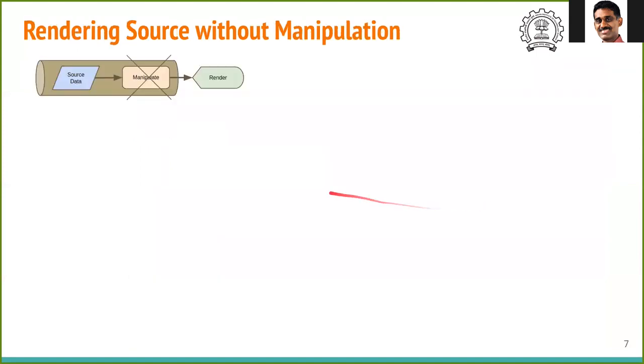We will now see some demonstrations of visualization in ParaView. Let us take the simple example where you have a source data and you directly render it without any manipulation. Let us say we solve this equation del square T equals zero where T is the temperature.